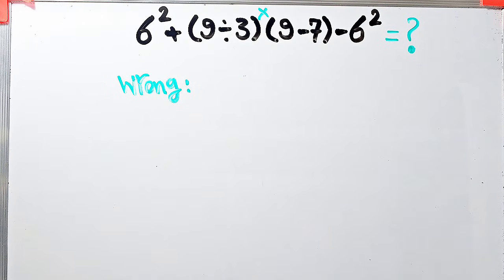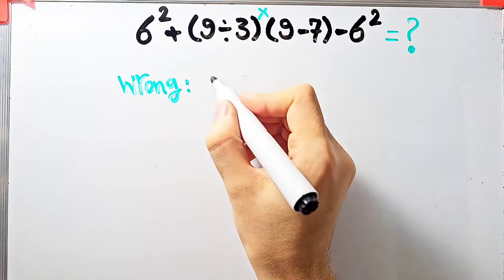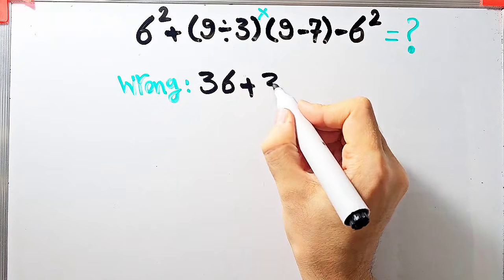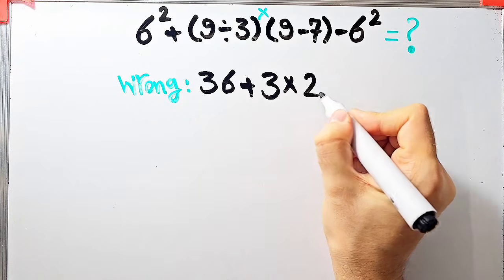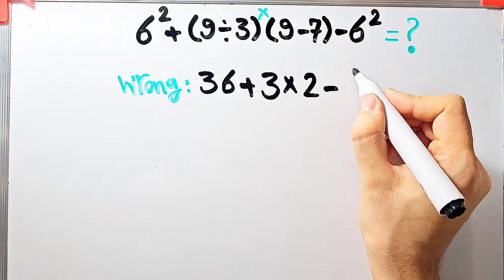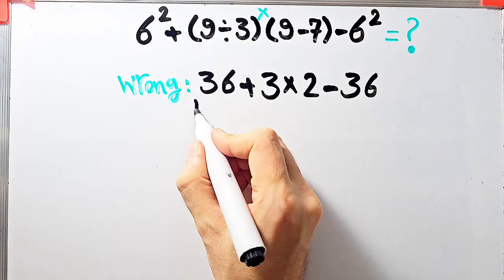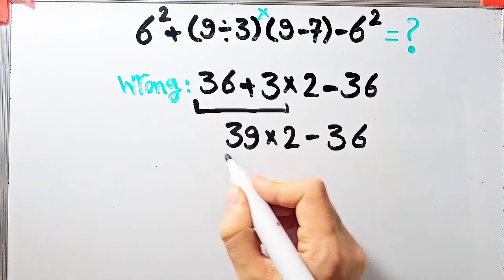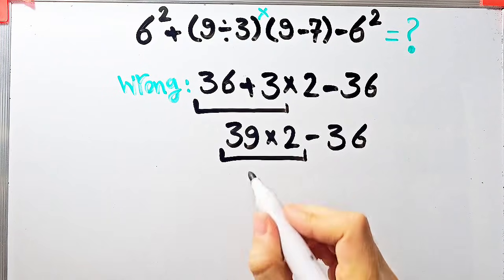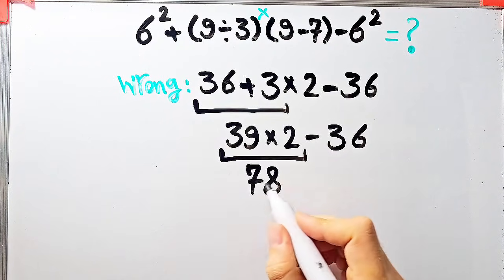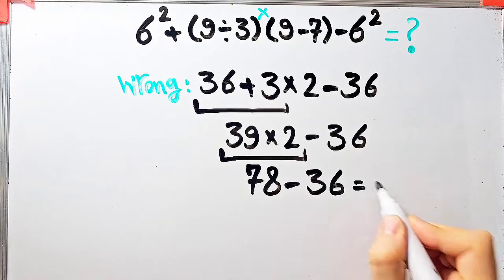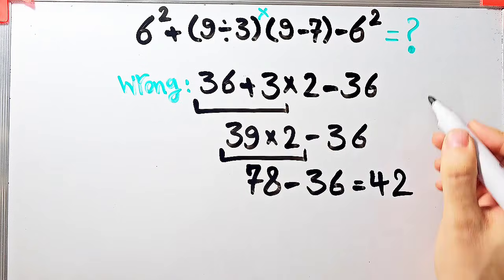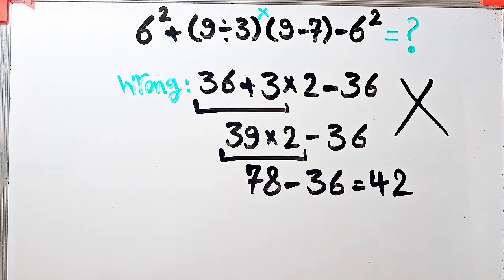They say 6² equals 36, then 36 plus 9 divided by 3 equals 3, then times 9 minus 7 equals 2, minus 6² which equals 36. Starting from the left: 36 plus 3 equals 39, 39 times 2 equals 78, 78 minus 36 equals 42. They say the final answer equals 42, but this answer is definitely wrong.